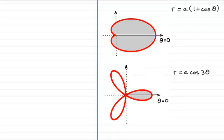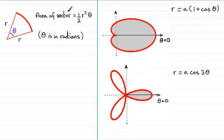Now to find these areas we should be familiar with the area of a sector. If we've got a sector with a radius r and we've got an angle here theta, then the area of the sector is given by a half r squared theta where theta is measured in radians.